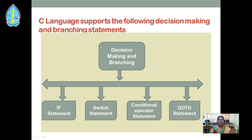In this diagram, we can see what decision-making and branching statements are supported by C. The first one is the if statement, another is the switch statement, next is the conditional operator statement, and the goto statement. In this video, we are going to discuss about the if statement. The remaining statements will be discussed in future sessions.